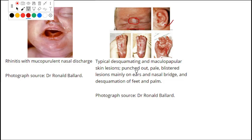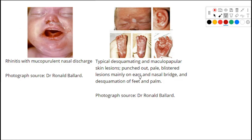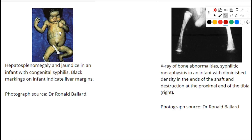There may also be desquamation of the feet and palms. This picture shows rhinitis — inflammation of the nose — with mucopurulent nasal discharge. Another image shows hepatosplenomegaly: the liver is abnormally enlarged, and the spleen is also enlarged, with black markings indicating the liver margin.